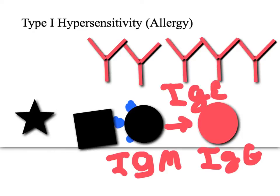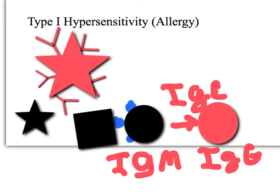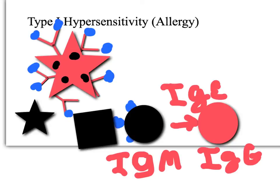This is no problem on the first exposure, but after the first exposure, the IgE antibodies will bind to mast cells. Mast cells have a bunch of things called granules. The next time the antigen is present, it will bind to the antibodies on the mast cell, causing degranulation — meaning those granules spit out histamines and other inflammatory cytokines.